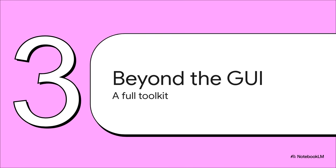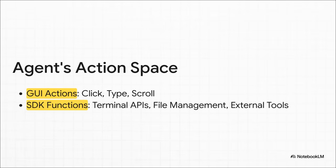Next up, how did they get the agent to do more than just click around on the screen? Well, they gave it a much bigger toolkit. So here's the key idea. UITRS2 has what's called a hybrid action space. That's just a fancy way of saying it has more than one way to get things done. Of course, it can do all this standard GUI stuff, clicking, typing, scrolling.